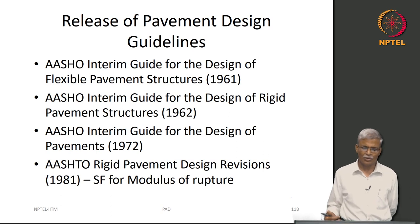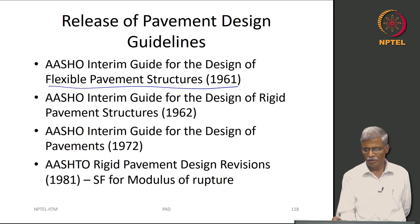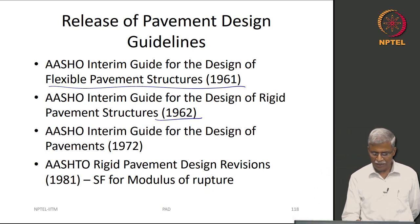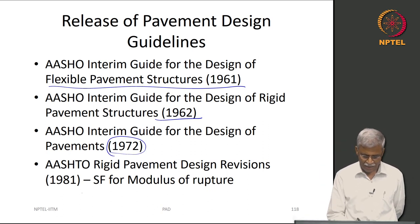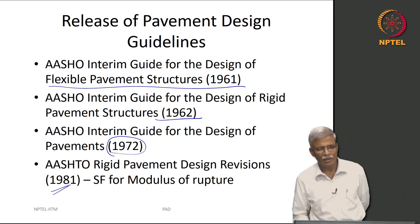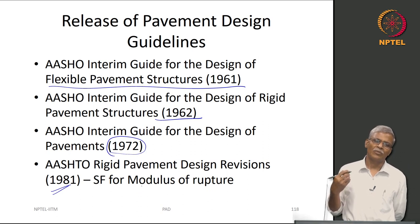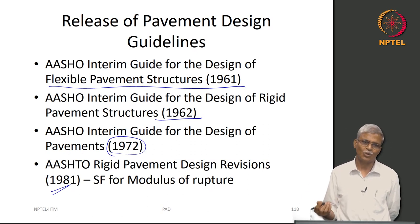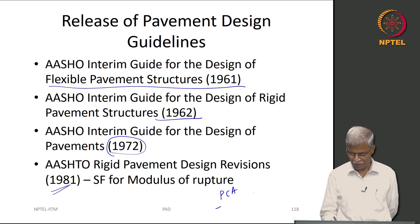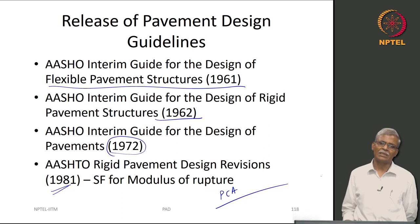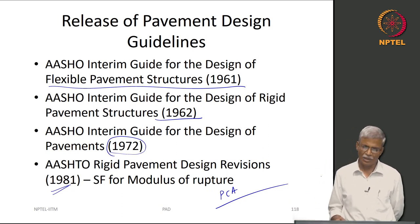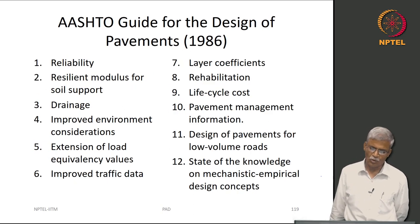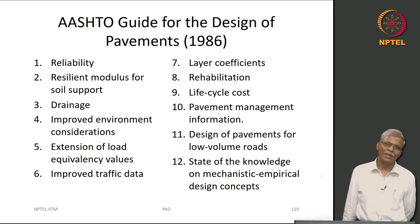The first bituminous pavement guideline was released in 1961. The next year they released the concrete pavement guidelines. Then they integrated everything and released one AASHTO interim guide for the design of pavements in 1972. There were revisions in 1981 covering stiffness modulus, calibration factors, and stress ratios. The PCA method of pavement design relating flexural stress ratios with modulus of rupture also came in during this period, though we are not really talking about concrete pavement in this course.